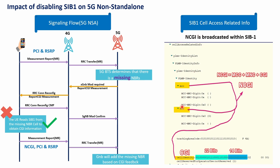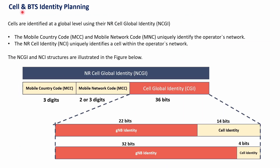Let's quickly go through the NCGI information structure. The NCGI contains three parts: MCC (up to 3 digits), MNC (2 to 3 digits), and the NCI which is 36 bits. The NCI can be split as 22 bits for the gNB identity plus 14 bits for the cell identity, or alternatively 32 bits plus 4 bits. The majority of networks use the first option — 22 bits and 14 bits — which is sufficient to cover most site IDs and cell identities. This can be configured through your OAM system based on network requirements.